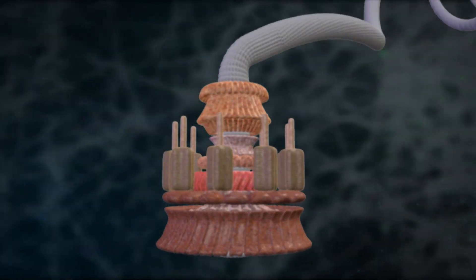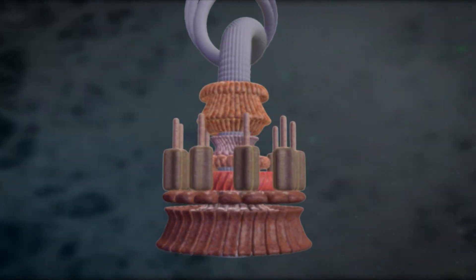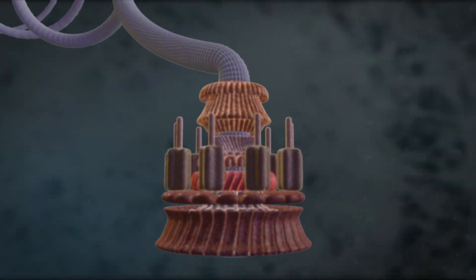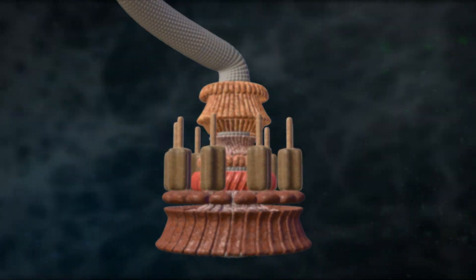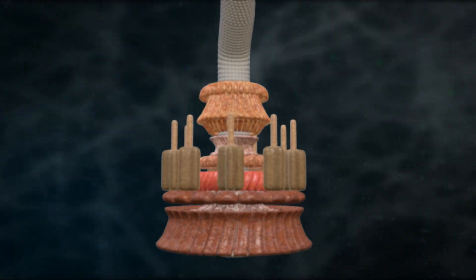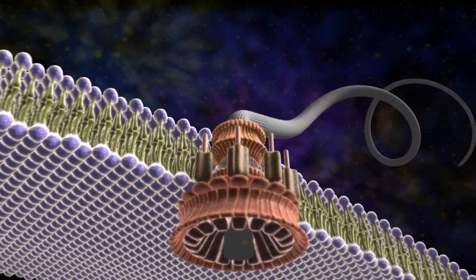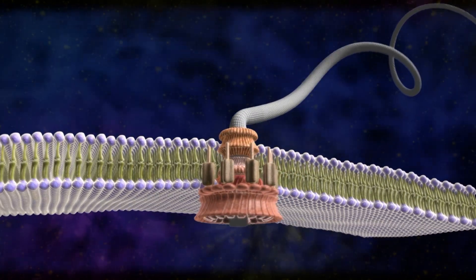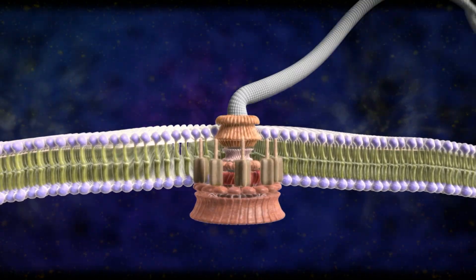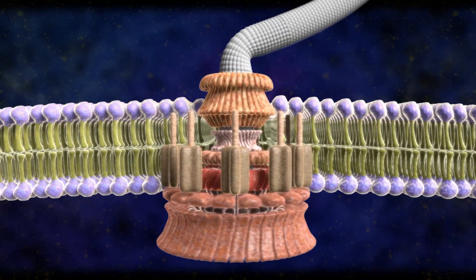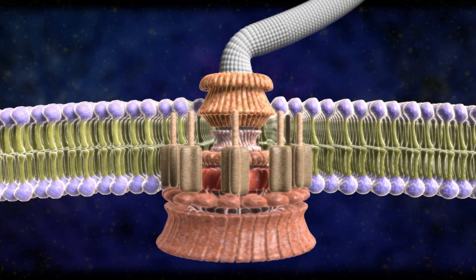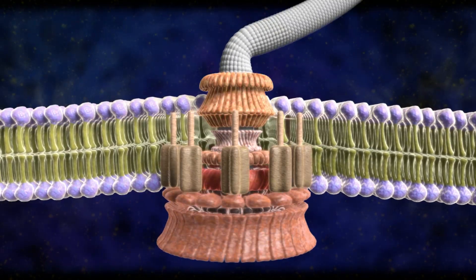Natural selection selects or favors variations that confer a functional advantage on a system. Many of the simpler versions you could imagine of the bacterial flagellar motor perform no function at all. So if you imagine trying to build a flagellar motor, adding parts one by one until you finally get to the complete system, you're going to encounter configurations of parts that confer no function, in which the motor simply will not work — at which point the evolutionary process will terminate. It will cease to continue because the system conferring no function will not be preserved and passed on to the next generation.